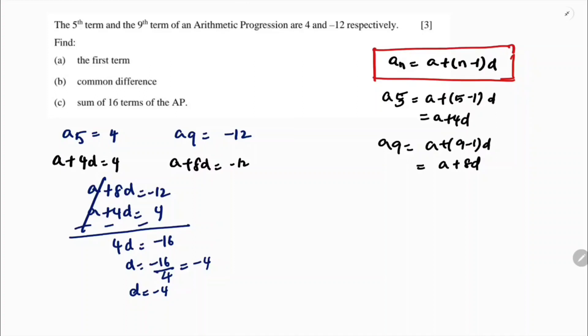If I substitute D value in this, A plus 4D is 4. A plus 4 into minus 4 is 4. A minus 16 is 4. If I transpose minus 16, plus 16. So the value of A is 20.